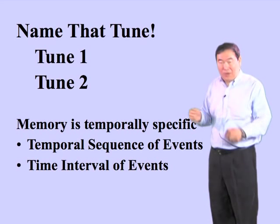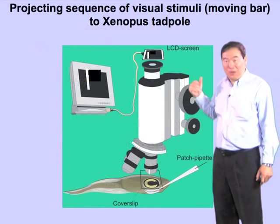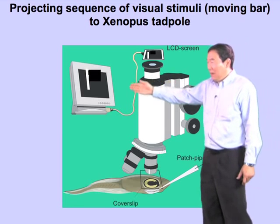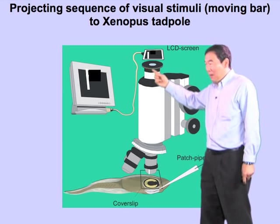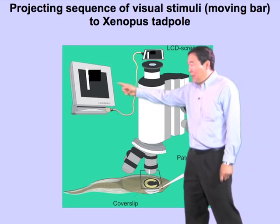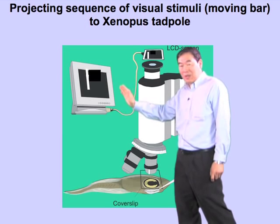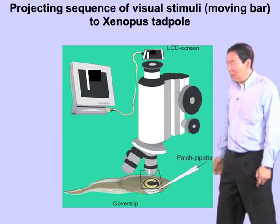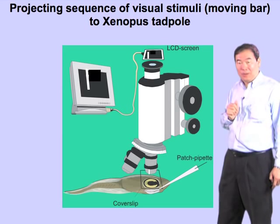In this part, I want to illustrate with an example how an animal, or the nervous system, can learn the sequence of events and remember it. The first experiment uses the visual system — rather than the auditory system — using the equivalent system of a Xenopus tadpole. We project a moving bar image across the retina of the optic tectum of the Xenopus tadpole, projecting this bar through an LCD screen to the eye of the tadpole on the microscope stage.